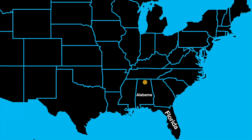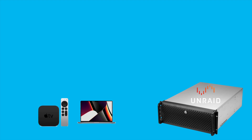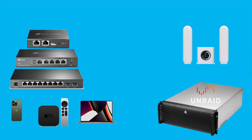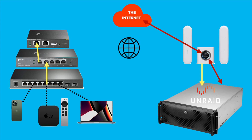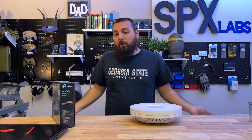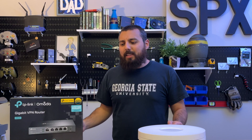So let's come up with a scenario to explain it. I live here in Alabama and I actually have a server at a friend's house in Florida. On that server, I'm running the operating system Unraid, which is hosting a container running OpenVPN server. All of my devices connected to my local Omada hardware are now going to get their internet through that OpenVPN server in Florida, so they appear as if they are in Florida.